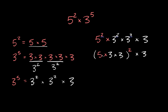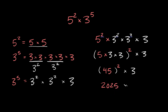Now let's simplify this. In parentheses, 5 times 3 is equal to 15, and 15 times 3 is equal to 45. So we have 45 squared times 3. If your teacher actually wants you to multiply this out, you can multiply 45 times 45 — just plug that into your calculator — and you'll get that 45 times 45 is equal to 2025. Then times 3, you'll get that this is equal to 6075.